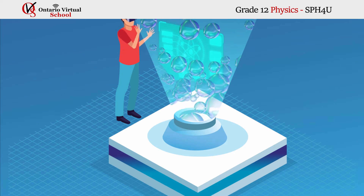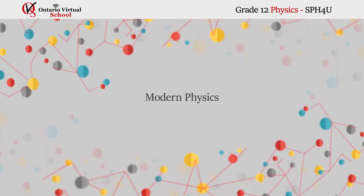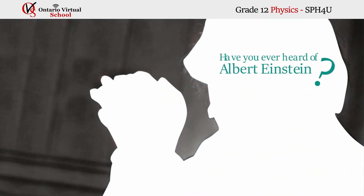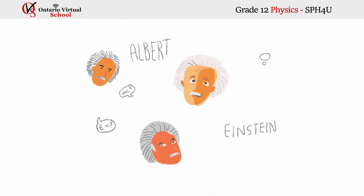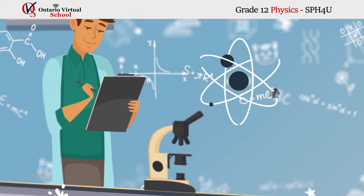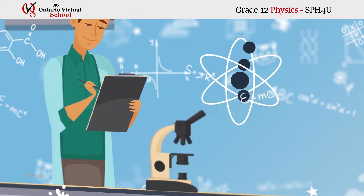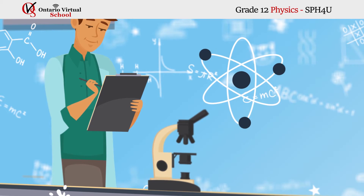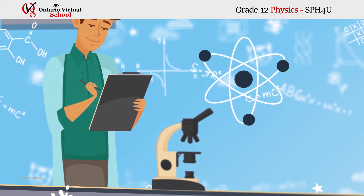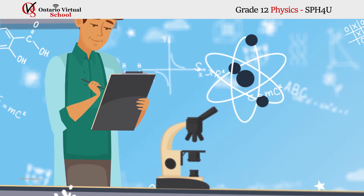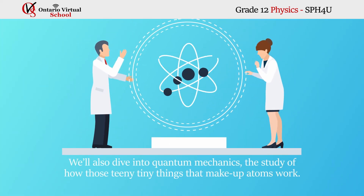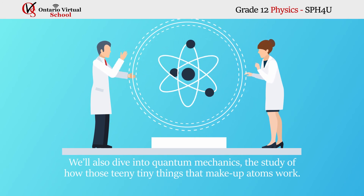Modern physics: have you ever heard of Albert Einstein? He had some pretty crazy hair, but he also had some great ideas. In this unit we will study one of his most significant ideas — the theory of relativity, a scientific explanation of how space relates to time. We'll also dive into quantum mechanics, the study of how the teeny tiny things that make up atoms work.